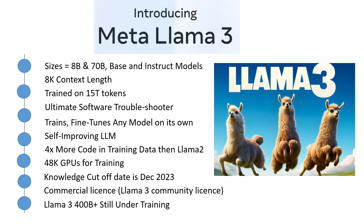Just a few hours ago, Meta has released the much-awaited Llama 3 models. Meta has developed and released the Llama 3 family of large language models, which is a collection of pre-trained and instruction-tuned generative text models in 8 billion and 70 billion sizes. The Llama 3 instruction-tuned models are optimized for dialogue use cases and outperform many available open-source chat models on common industry benchmarks.